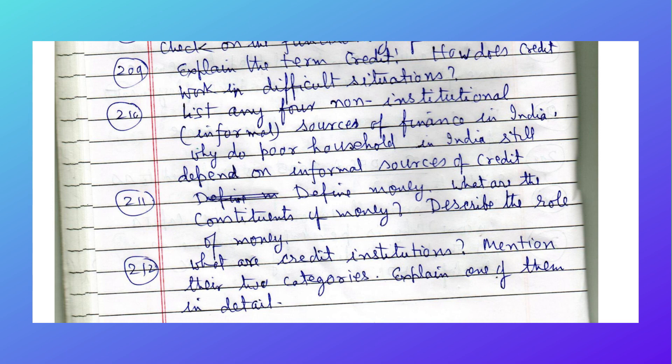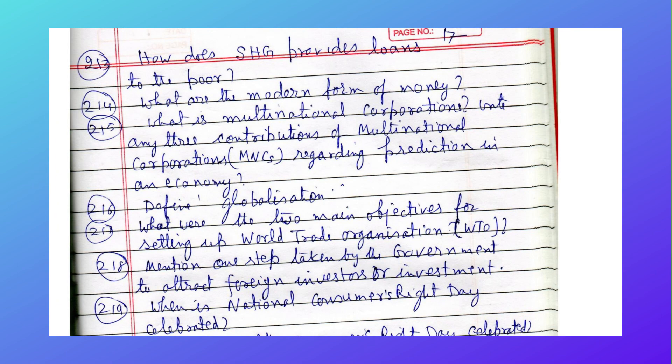List four non-institutional informal sources of finance in India. Why do poor households in India still depend on informal sources of credit? Define money and what are the constituents of money. Describe the role of money. What are credit institutions? Mention two categories and explain one in detail. How do Self Help Groups provide loans to the poor? What are the modern forms of money?